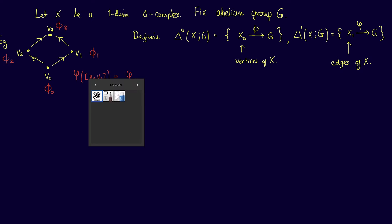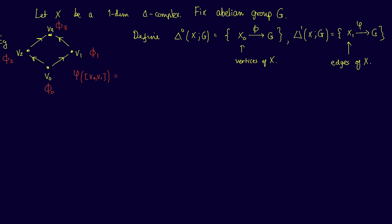So far we have algebraic structures on the vertices as well as on the edges of X, but we do not at this point have any way of relating the algebraic structure on the vertices to the structure on the edges. This is really what we want, for reasons that will only become apparent later on. In order to relate the groups Δ⁰(X;G) with Δ¹(X;G), we'll construct a co-boundary map δ from Δ⁰ to Δ¹.